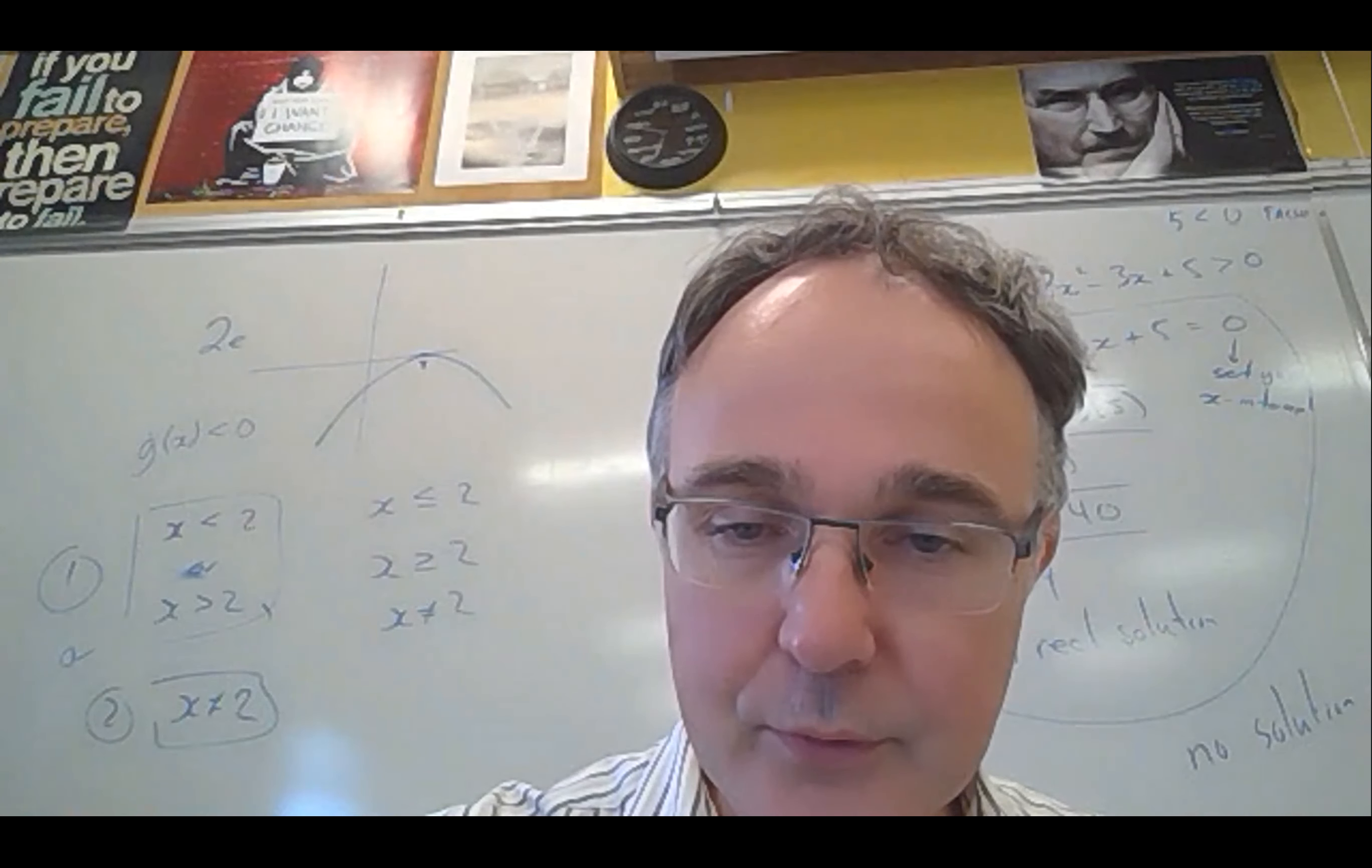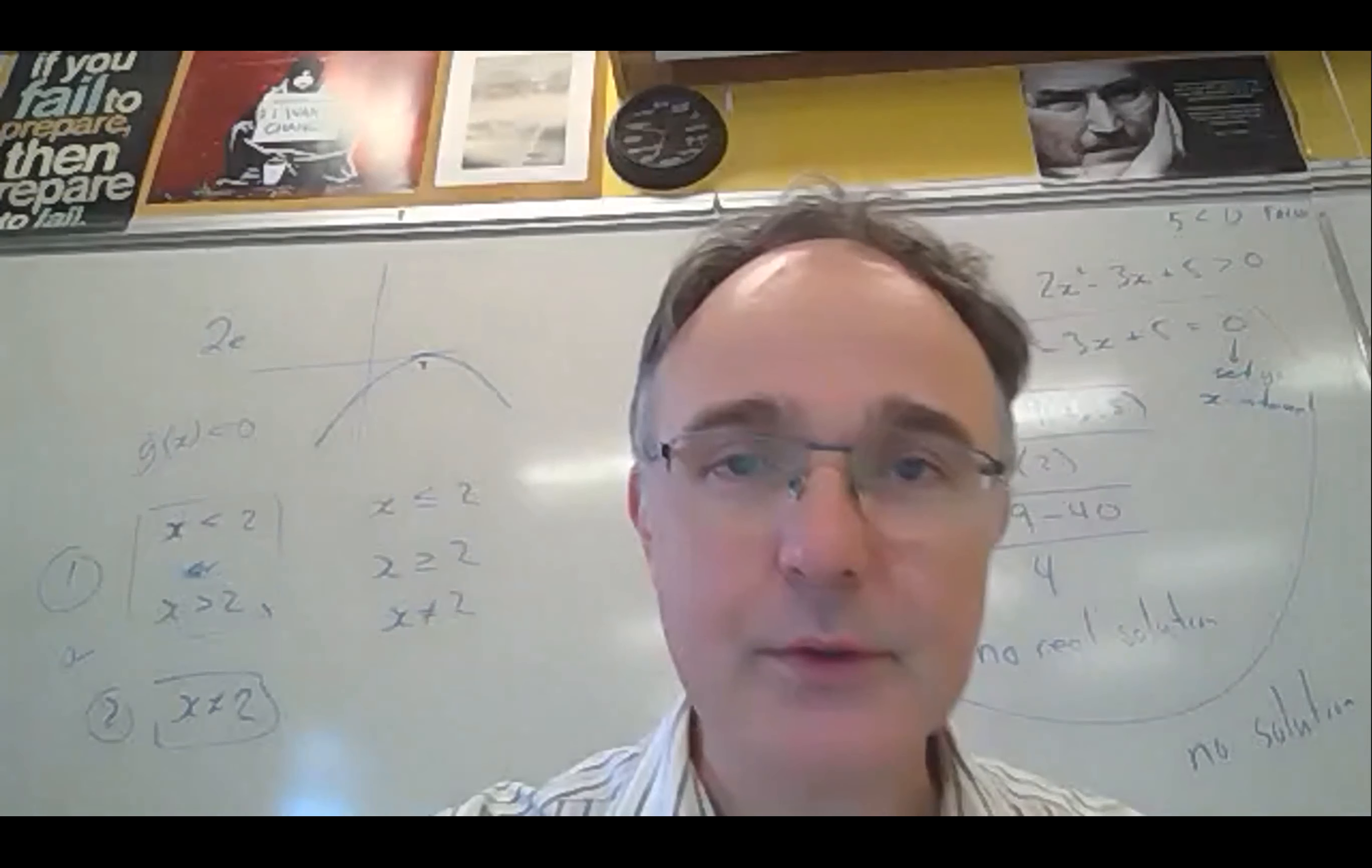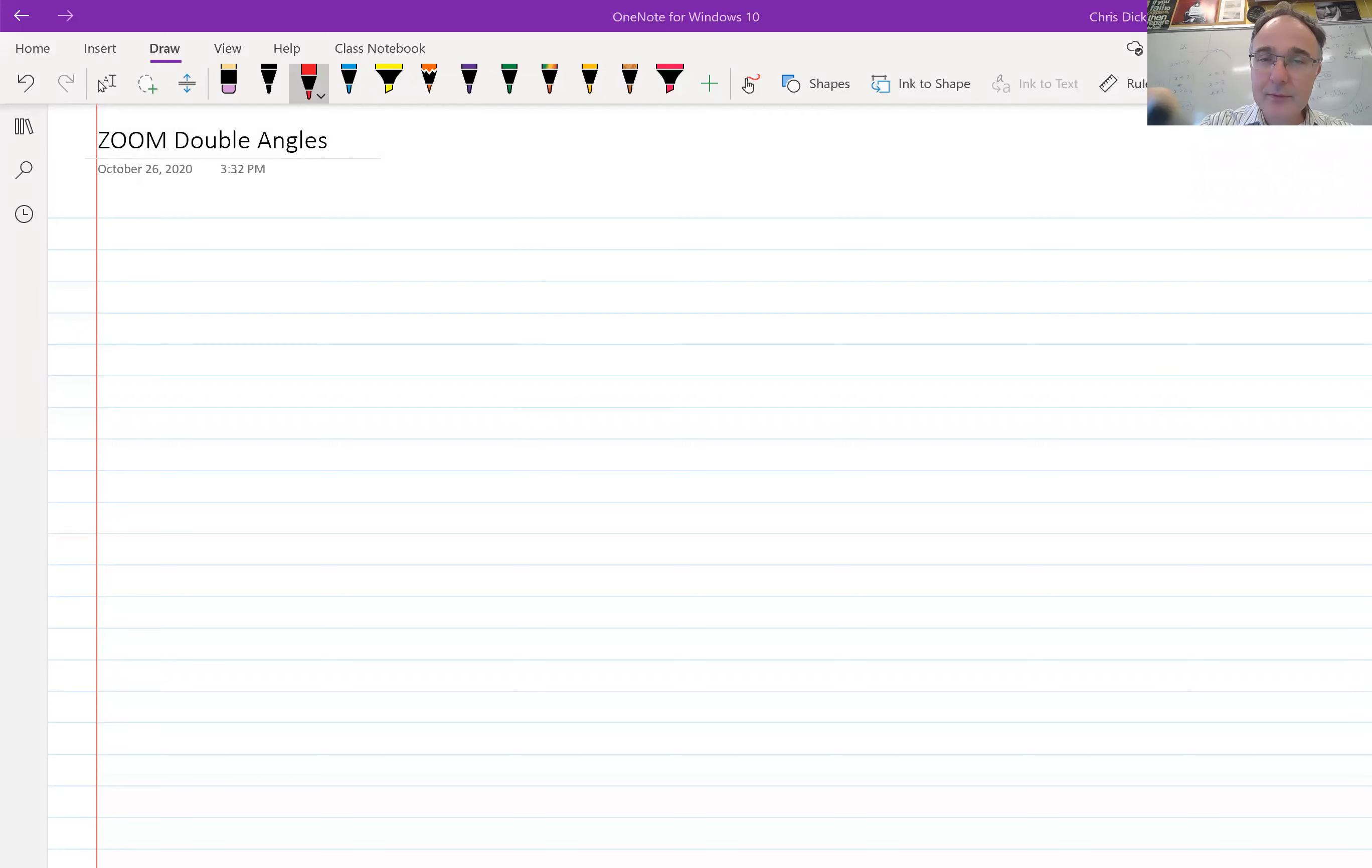So I'm going to share my screen and I'm going to go over a few questions dealing with our double angle identities questions here. I'm going to turn my picture off, otherwise you're going to be staring at my forehead. Okay, so let's write down our first question and we're going to simplify this using identities here. Simplify 12 sin 4x cos 4x.